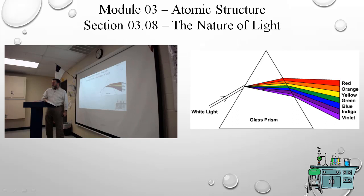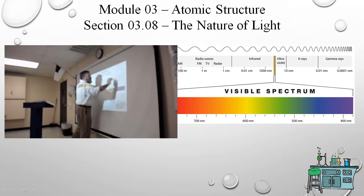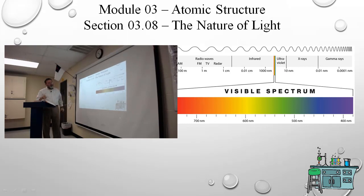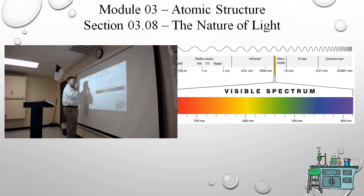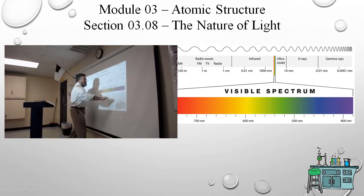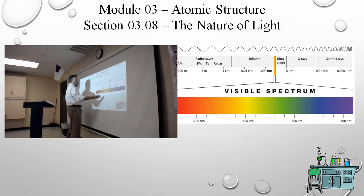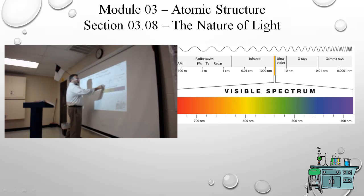You won't have to memorize the exact wavelengths for each color, but you do need to know the relative positions — where red is relative to green, where green is relative to violet. Knowing the order ROYGBIV is important for this module. Down at the red end we're in the 700 nanometer range — 700 times ten to the negative ninth meters — and over on the violet side it's closer to 400 nanometers. The electromagnetic spectrum includes AM radio, FM, TV, radar, infrared, and then the visible spectrum.